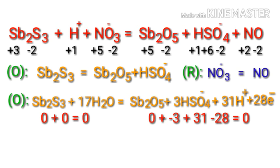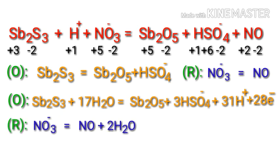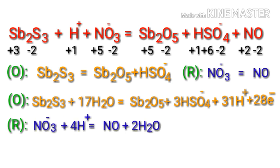Now you can balance the number of atoms in the reduction half-reaction. To balance the oxygen atoms, add water molecules to the other side. The oxygen atoms are balanced. Now balance the hydrogen atoms by adding H⁺ ions to the other side. Then make the charges equal on both sides by adding electrons.